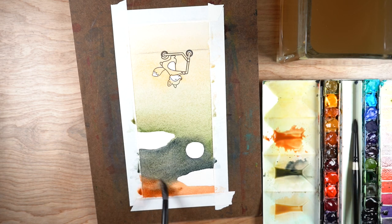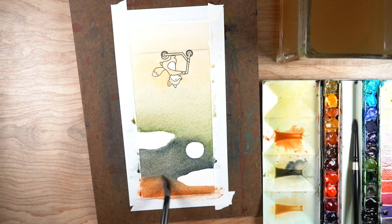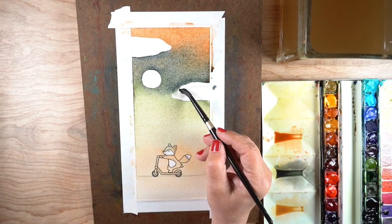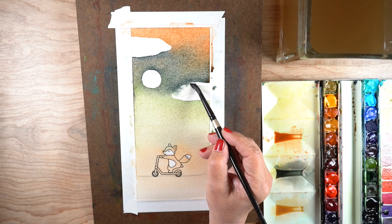One of the keys I find for washes is to constantly be watching where paint is collecting. Right underneath that one cloud the green was collecting, so I turn it over so the green will move the other direction.